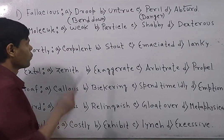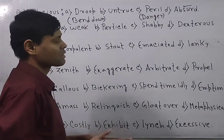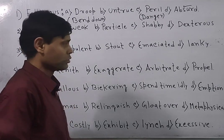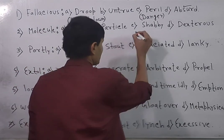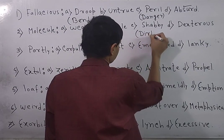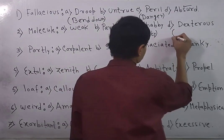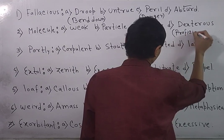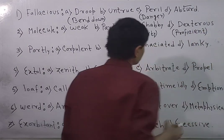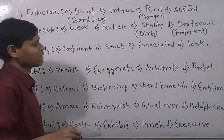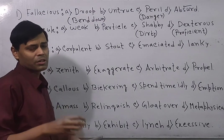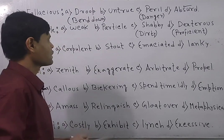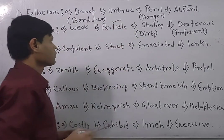Now go to the next question. Molecule. Weak, particle, shabby, dexterous. Shabby means dirty, shabby means extremely dirty. Dexterous means skillful or proficient. So if the question is all about molecule, that means very small ingredient or something like that, so the answer lies in option B, that is particle.